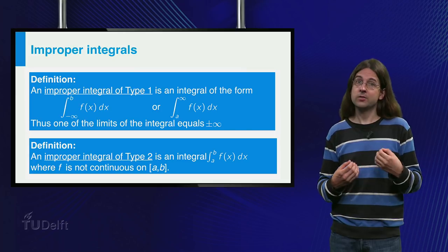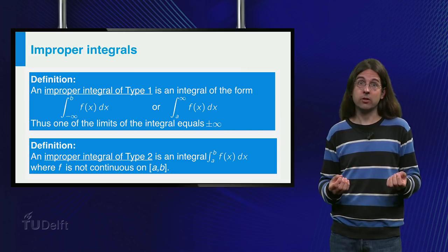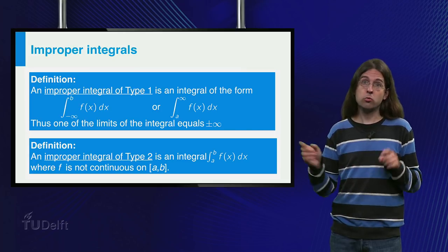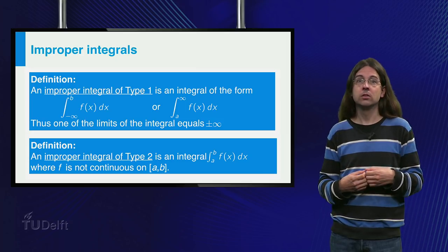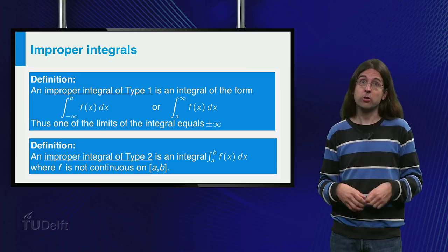If the function you integrate is not continuous at some point in the domain, or on one of the endpoints of the domain, as in the first example of this video, the integral is improper of the second kind.